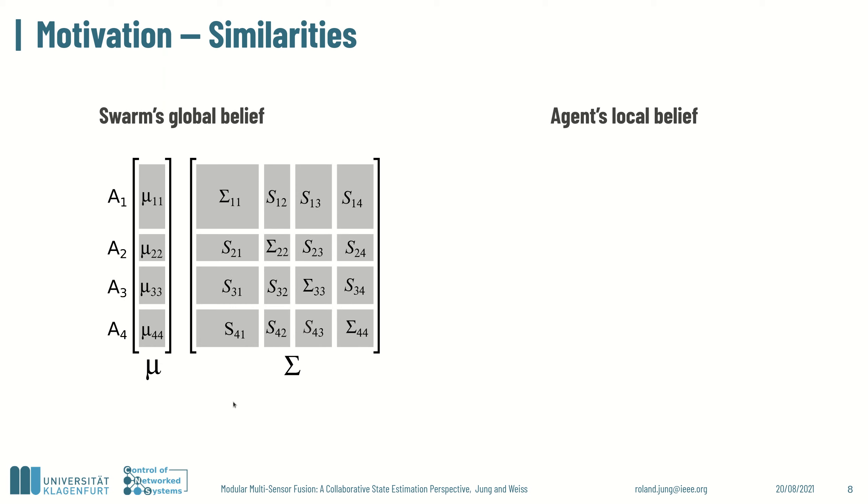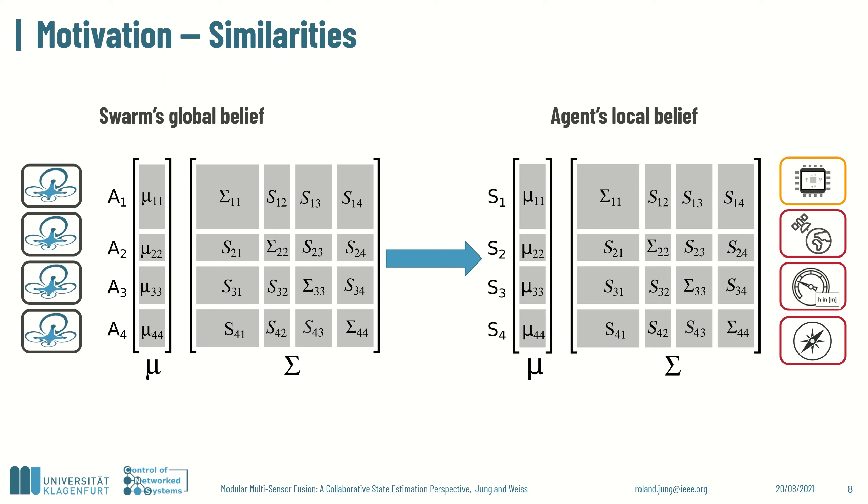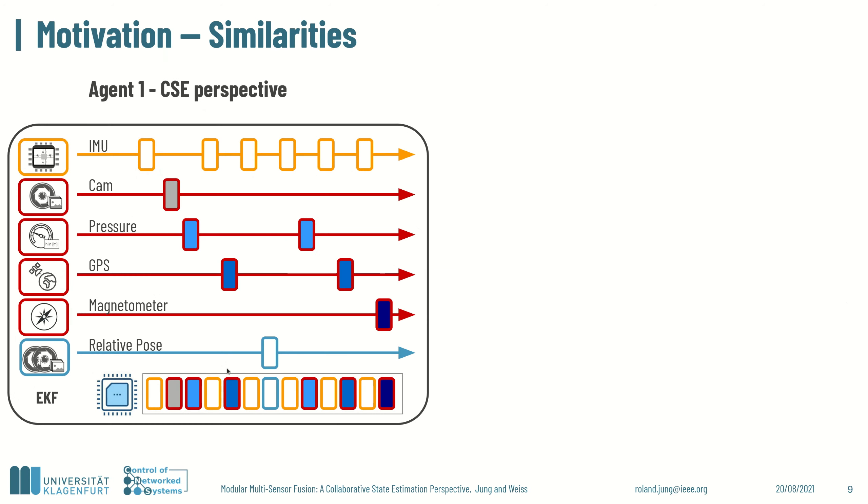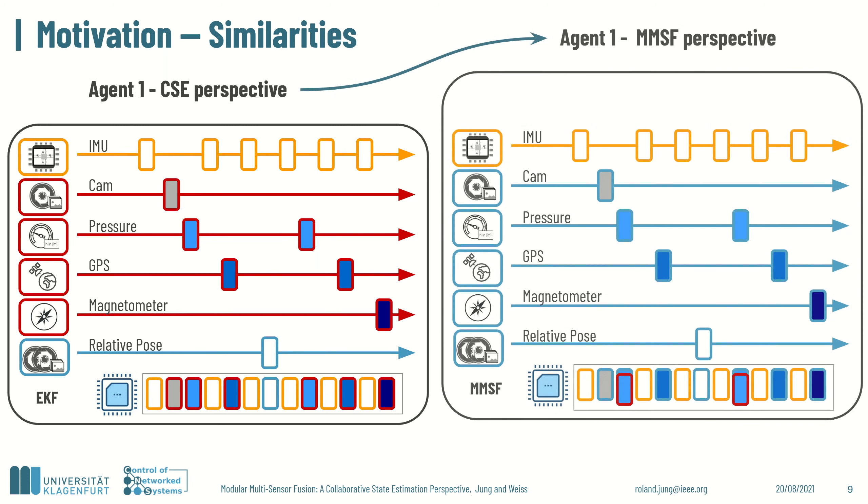Therefore, modular multisensor fusion can be seen as a problem of multi-agent collaborative state estimation, aiming for decoupled and decentralized estimation with the difference that swarm agents are now considered sensors of a single platform. Applying the collaborative state estimation perspective on local agents' beliefs allows us to use existing decoupling strategies, mainly developed in the domain of collective localization, and to generalize multisensor fusion for Kalman filter formulations. Proprioceptive sensors, in our case an IMU, are held in orange again, while exteroceptive updates are treated as joint observations in blue. In addition, private observations are inherently supported.